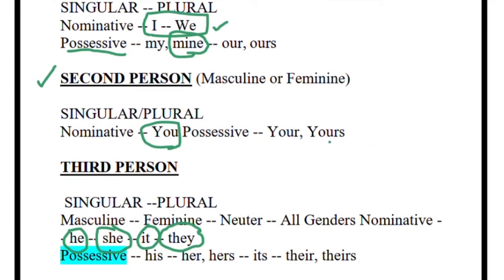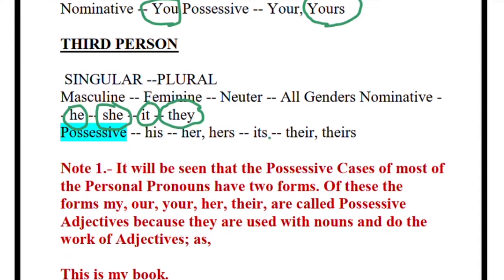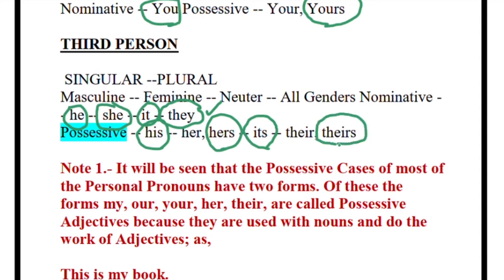Coming to the second person — what is the possessive word? If I say 'this bag is yours,' the word 'yours' becomes possessive pronoun for the second person. And for the third person, in case of possessive pronoun, the words are: this bag is hers, this bag is his, 'its' is another word, and this bag is theirs. So only the circled words — write them down in your copies so that it is completely clear.